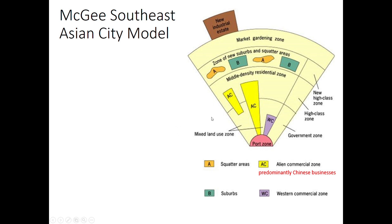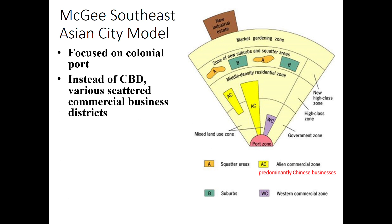Southeast Asia has a lot of coastlines, so there are a lot of ports. As Europeans colonized these areas, they set up the most important functions closest to the ports, because you want to be close to where you're shipping stuff in and out. So the government zone is right near the port, and the high-class residential zone is right near there as well. The farther out you go, the worse the housing gets — decent housing, then middle class, then squatter settlement areas. Instead of a single central business district, you often have multiple CBDs scattered around.